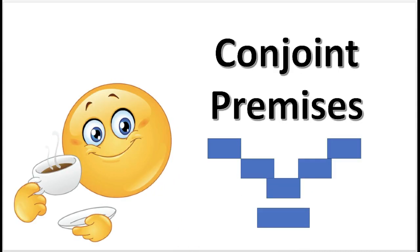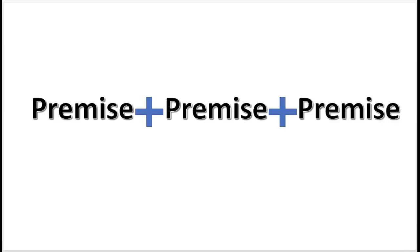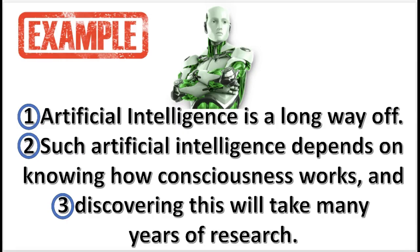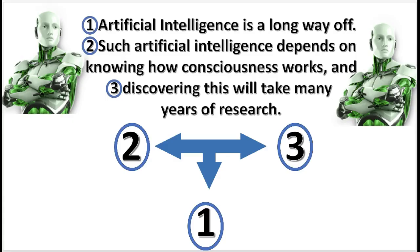The next diagram is called the conjoint premises. This diagram is used when two or more premises depend on one another in support of a conclusion. The diagram asserts that statements 2 and 3 support statement 1 conjointly. Independently, these statements provide little or no support — they depend on one another in supporting the conclusion.